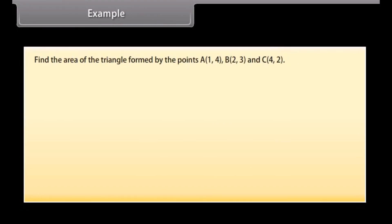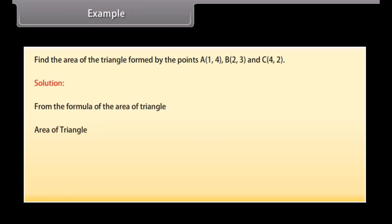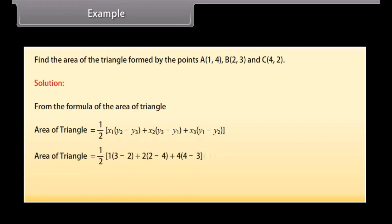Find the area of the triangle formed by the points A(1, 4), B(2, 3), and C(4, 2). Solution: From the formula for the area of a triangle, Area equals one-half times [X1(Y2 minus Y3) plus X2(Y3 minus Y1) plus X3(Y1 minus Y2)]. We have Area equals one-half times [1(3 minus 2) plus 2(2 minus 4) plus 4(4 minus 3)]. On calculating, the area of the triangle equals one-half square units.